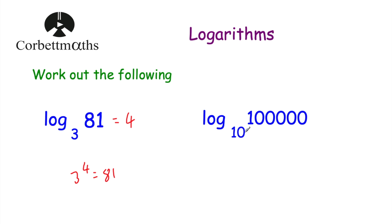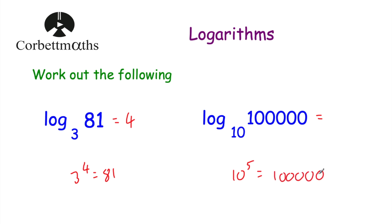This time we've been asked to work out log to base 10 of 100,000. What power would you raise 10 by to get to 100,000? 10 squared is 100, 10 cubed is 1,000, 10 to the power of 4 is 10,000, and 10 to the power of 5 is 100,000. A quick way to check: the power equals the number of zeros — 1, 2, 3, 4, 5. So log to base 10 of 100,000 is equal to 5.